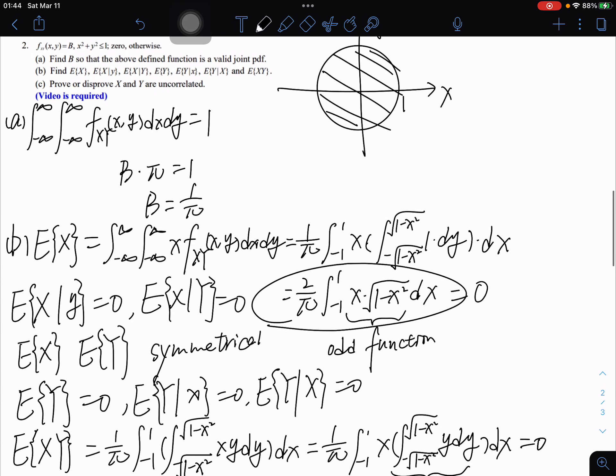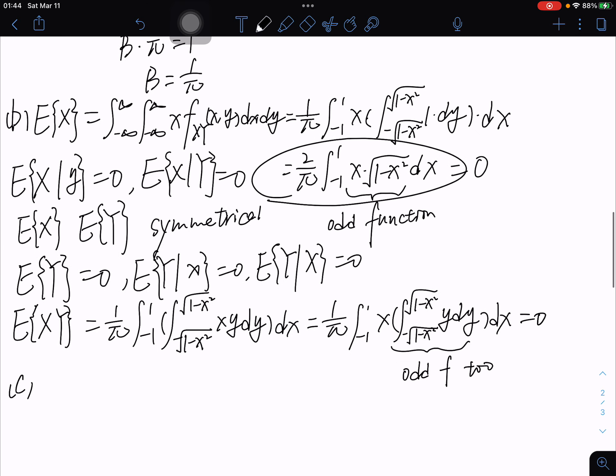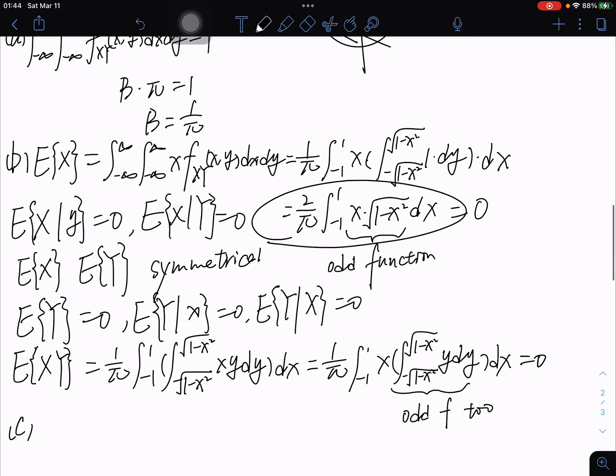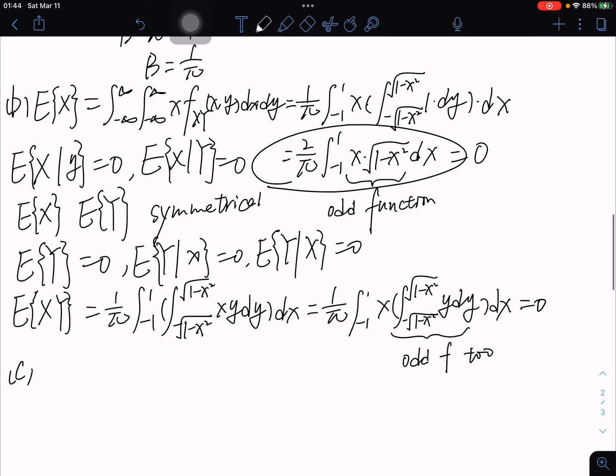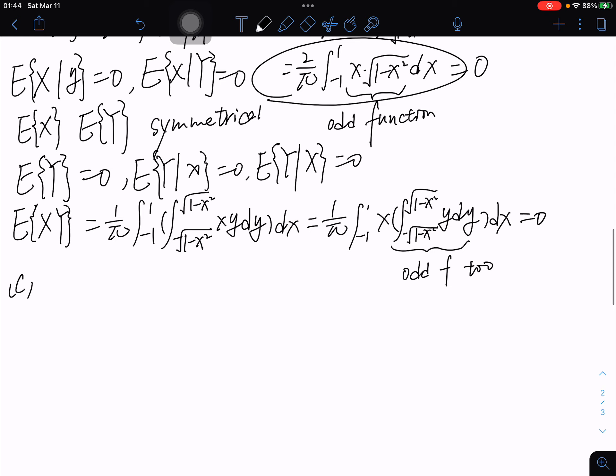Prove or disprove X and Y are uncorrelated. Since we have the results in problem B, E[XY] equals E[X]·E[Y], so we can get that X and Y are uncorrelated.